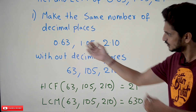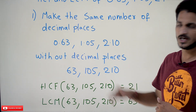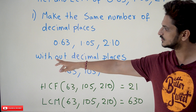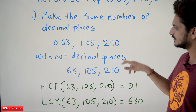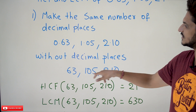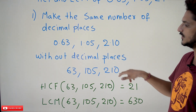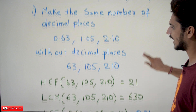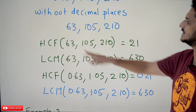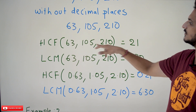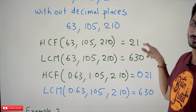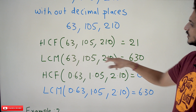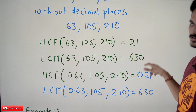Now remove the dot. If you remove the dot, the values without decimal places are 63, 105, and 210. Now we identify the HCF of 63, 105, 210 which is 21. The LCM of 63, 105, 210 is 630.